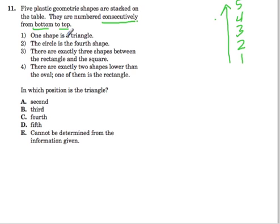What do we know? We know one of these shapes is a triangle. We know the circle is the fourth shape. So the circle is right here. So we're done with that one. And once you're done, I suggest crossing out that piece of information.